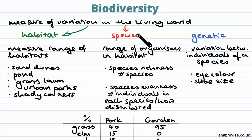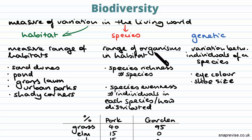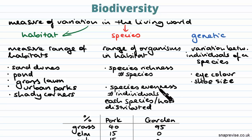Secondly, we have variation within species, and this is simply the range of organisms in a habitat. You can measure both species richness and something called species evenness. Species richness is simply the number of different species in the habitat. Species evenness is the number of individuals in each species and shows you how the species are distributed.